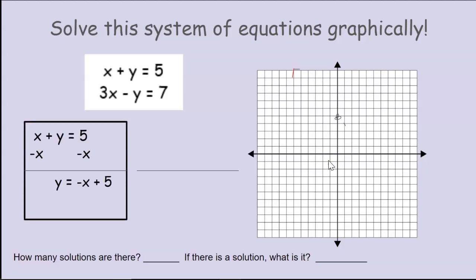If you did it correctly, you subtracted x from both sides. You found out y equals negative x plus 5. Okay, start with the 5 as a y-intercept, and you go down 1 to the right one, down 1 to the right one. Now, let's take a look at the second equation.